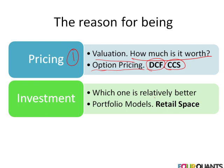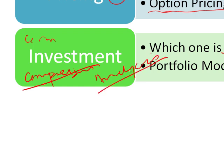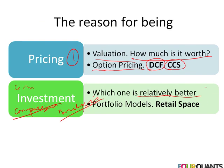The investment question asks: which one of these should I pick? From an analysis point of view, we've moved beyond determining what something is worth to asking which one is relatively better. Within the investment question, under a range of scenarios going from one to five, how would security A, security B, or security C perform?